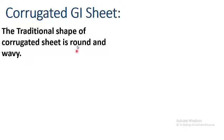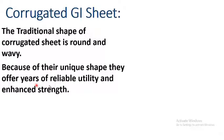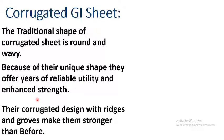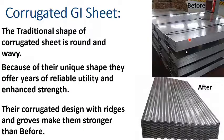Corrugated GI sheets — GI means galvanized iron sheets. The traditional shape of corrugated sheet is round and wavy. Because of their unique shape, they offer years of reliable utility and enhanced strength. Their corrugated design with ridges and grooves makes them stronger. As you can see here, these are manufactured as plain sheets but later on they get corrugated to achieve the desired strength and desired properties.